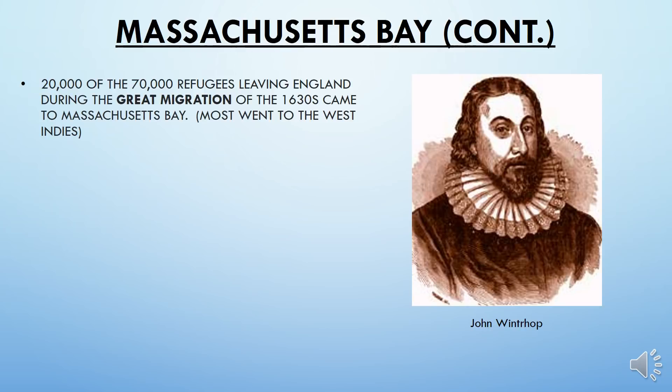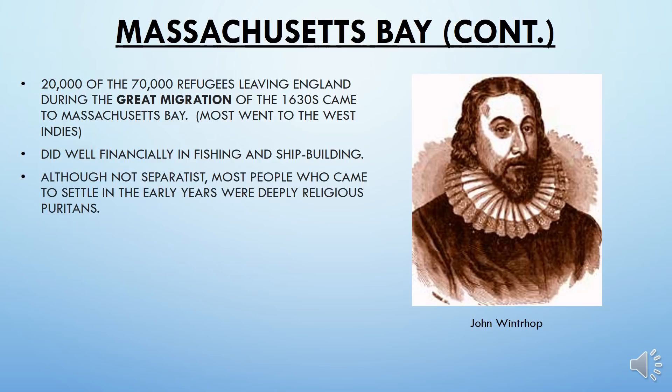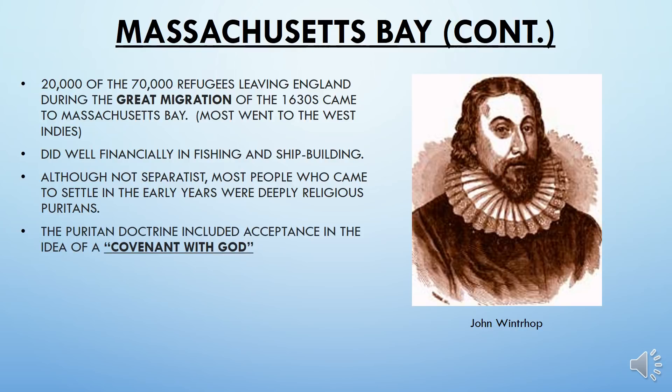In the decades to come, a large migration of people came to Massachusetts Bay. During the Great Migration of England in the 1630s, about 20,000 new settlers went to Massachusetts Bay, with the rest primarily going to the West Indies. They did very well financially in fishing and shipbuilding. They were not separatists, but they came with pretty deep religious backgrounds, and that became crucial.